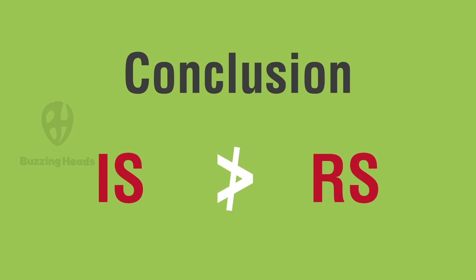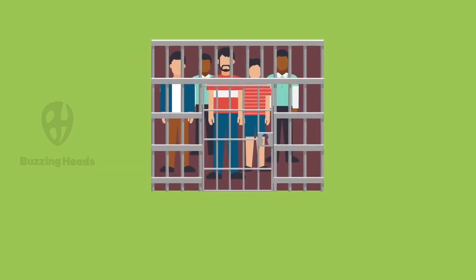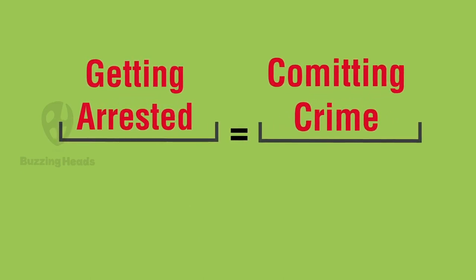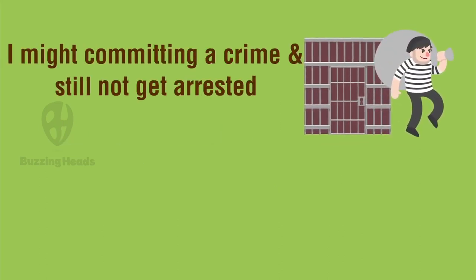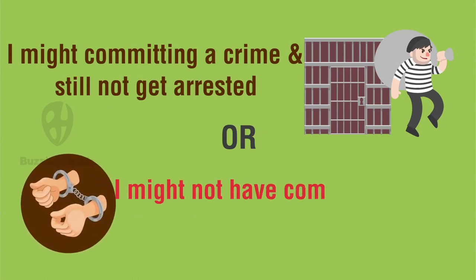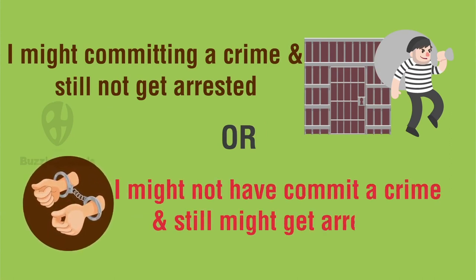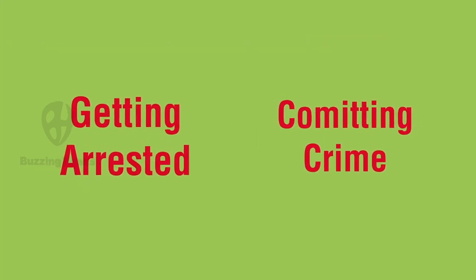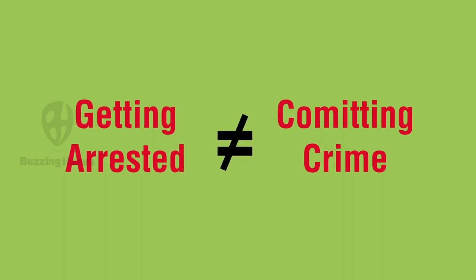IS is no better than RS in preventing criminals from committing additional crime. The premise also suggests IS is no better than RS, but wait, in what? In percentage of criminals getting arrested? So, what is this argument trying to say? Getting arrested is similar to committing crimes. The premise is all about getting arrested. The conclusion is all about committing crimes. I might commit crimes and still might not get arrested. Or, I might not have committed a crime and still might get arrested. So, these two activities, committing crime and getting arrested, appear the same thing but are not actually.